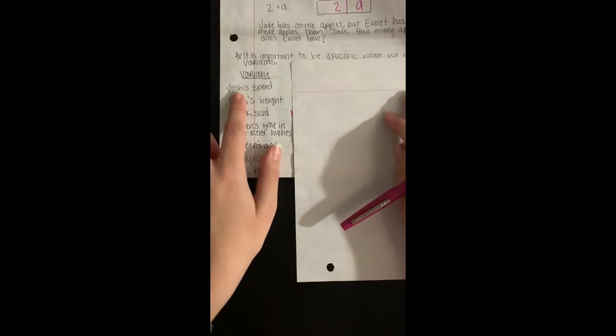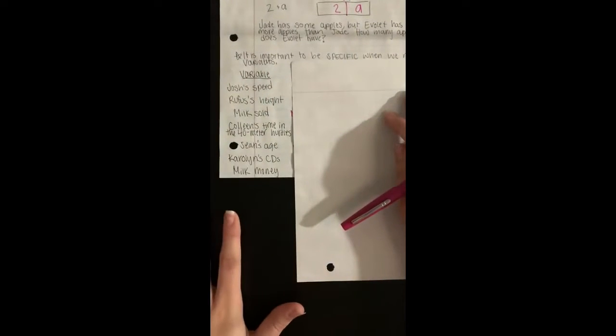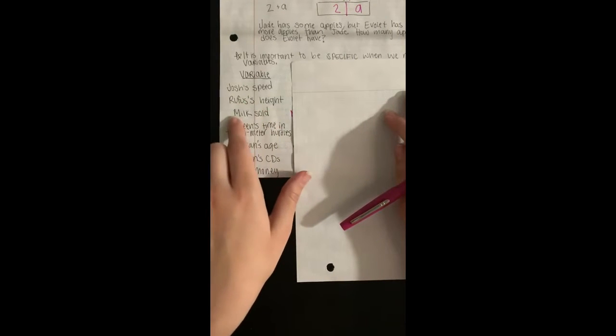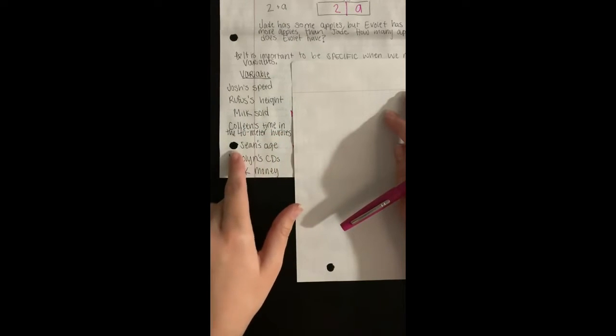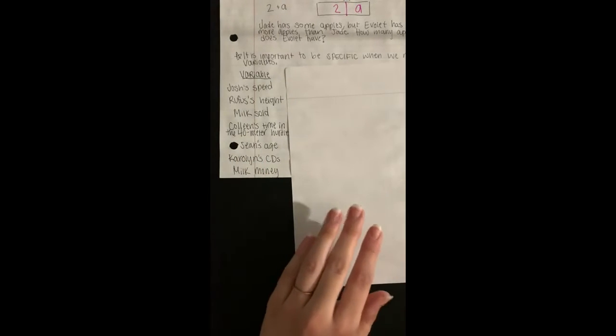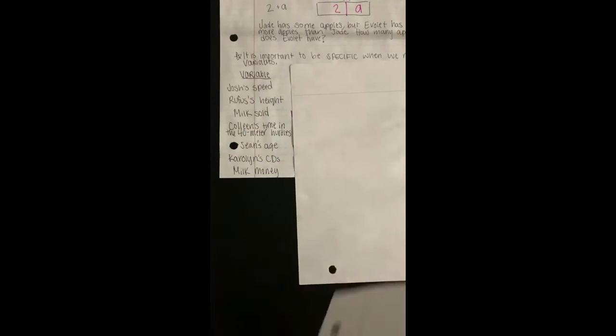So we're gonna pretend like we have a word problem that is about Josh's speed, a word problem that is about Rufus's height, milk sold, Colleen's time in the 40 meter hurdles, Sean's age, Carolyn's CDs, and then milk money. So we're gonna pretend like we have word problems about those things, but we don't really.